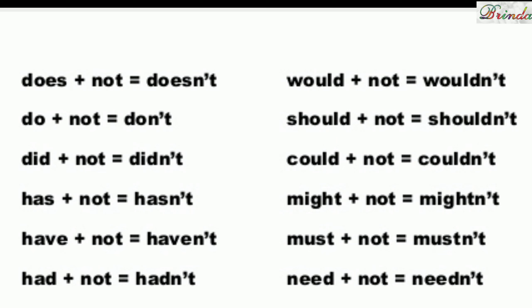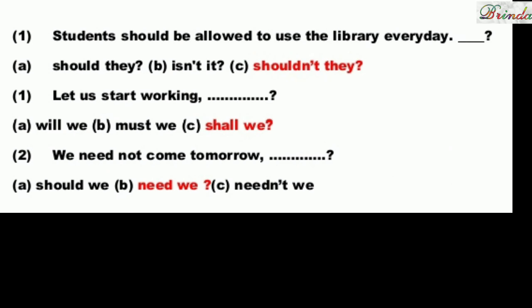Had plus not: hadn't. Would plus not: wouldn't. Should plus not: shouldn't. Could plus not: couldn't. Might plus not: mightn't. Must plus not: mustn't. Need plus not: needn't.